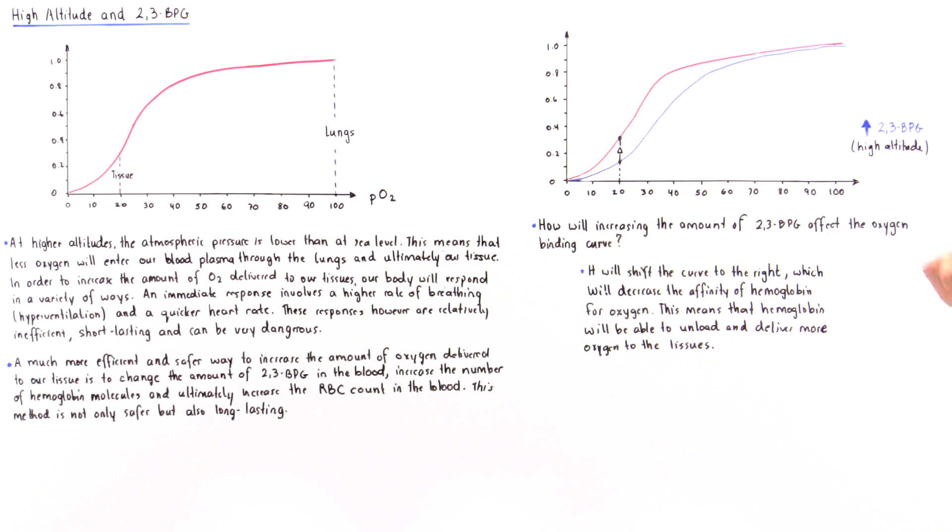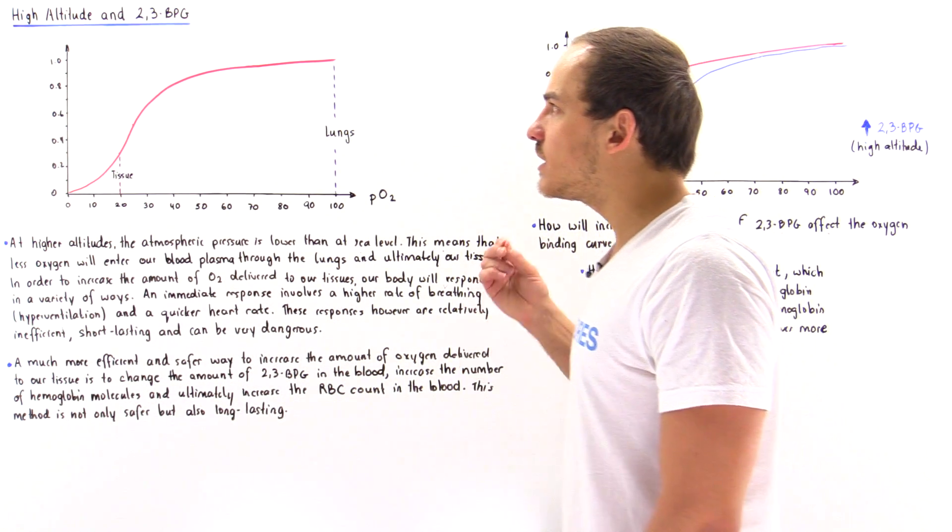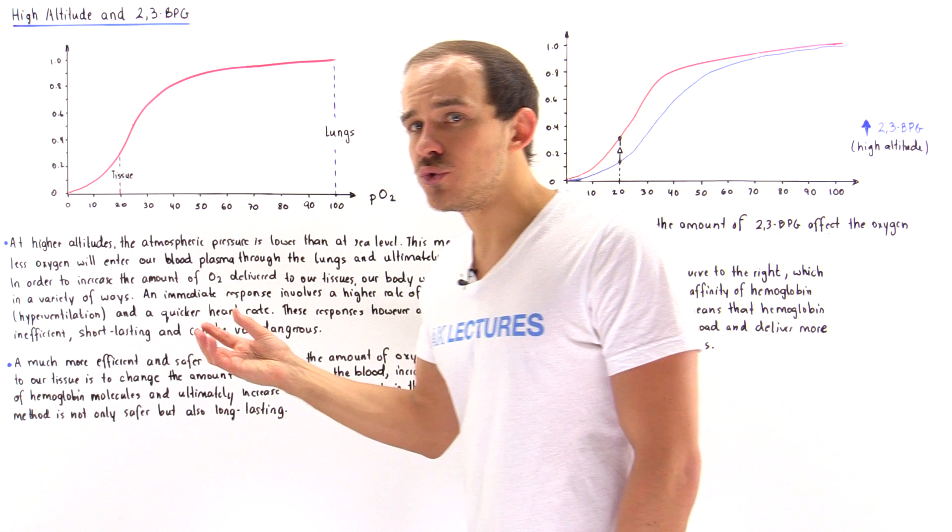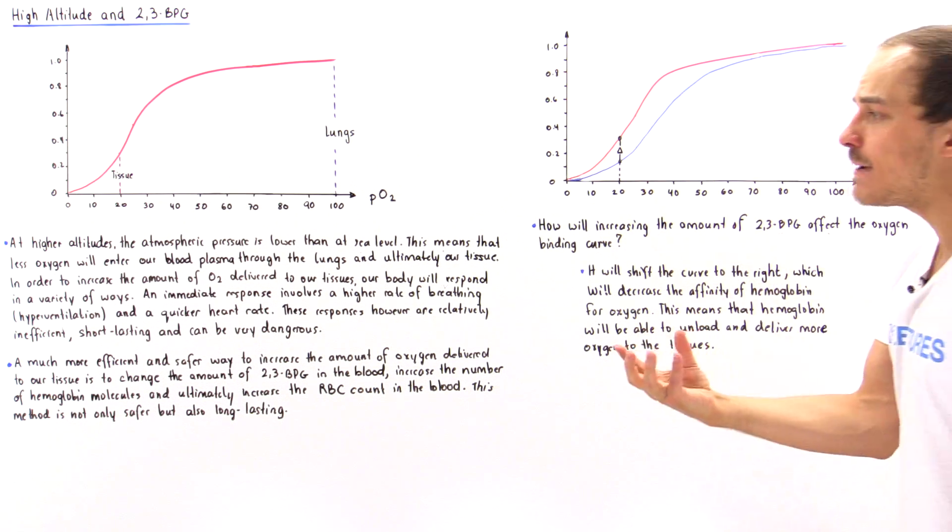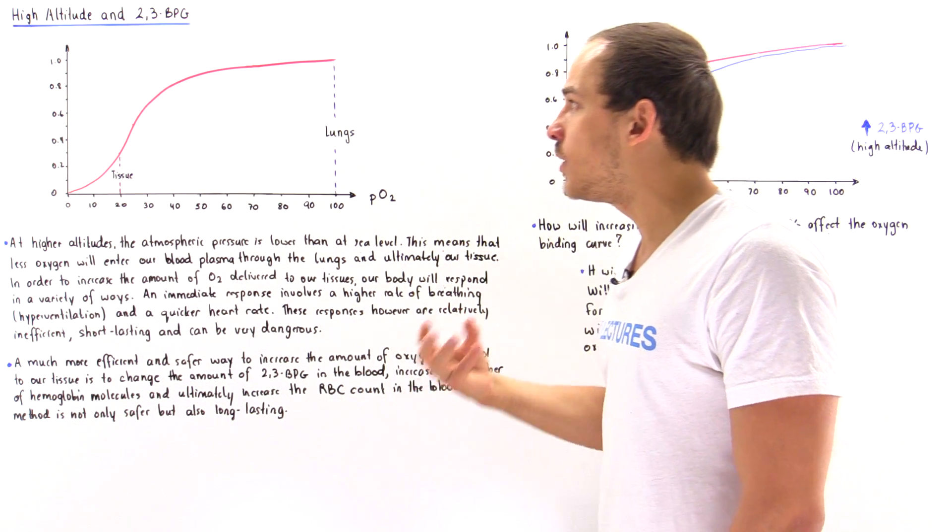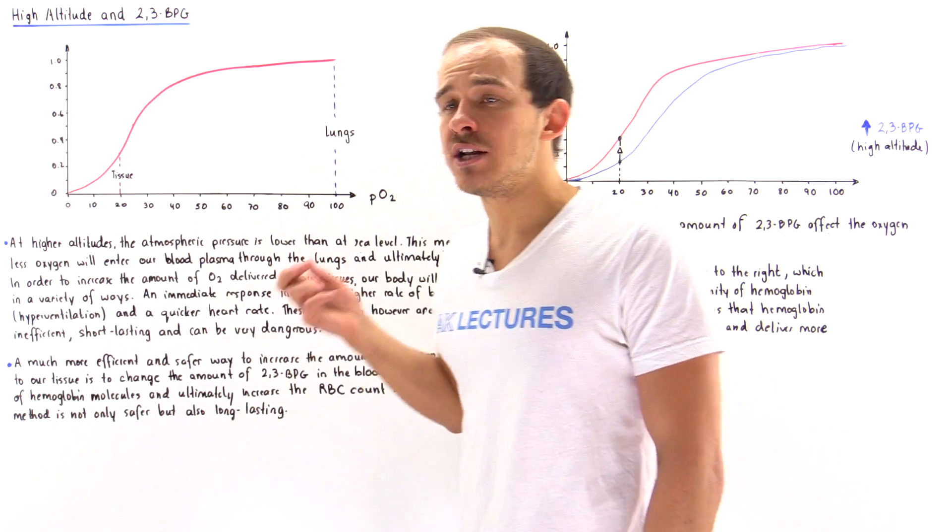How will increasing the amount of 2,3-BPG affect the oxygen binding curve? It will shift the curve to the right as seen in the diagram, and this will decrease the affinity of hemoglobin for oxygen. This means that hemoglobin will be able to unload and deliver more oxygen to the tissues. That's exactly why at high altitudes, our body wants to increase the concentration of 2,3-BPG over time, because we don't want to continually put more stress on the heart and cause it to increase the rate at which it pumps.